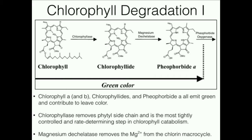In the previous video we talked about the chlorophyll cycle and we saw that in plants that's the cycle by which they interconvert chlorophylls A and B. That's a way of balancing the pigment needs of the plant.